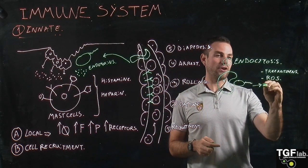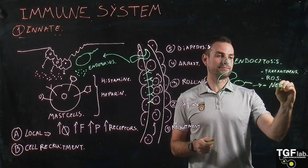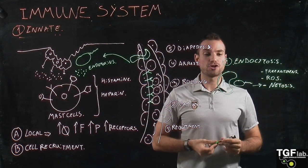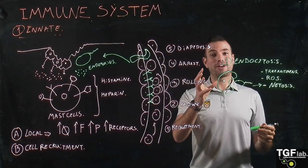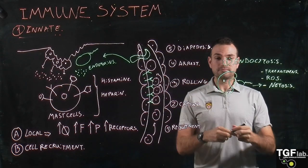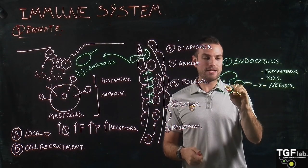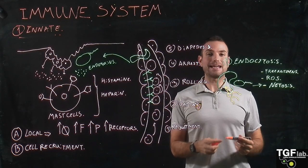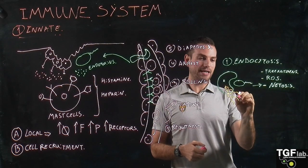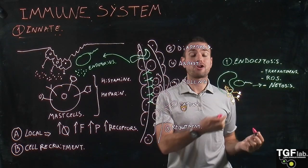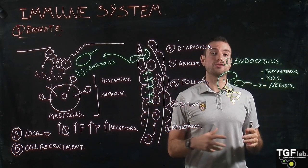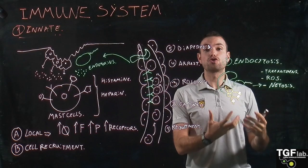Finally, they perform the process of NET formation. This is very interesting — the neutrophils secrete their chromatin, and within this chromatin we find different proteins from the bacteria as well as proteins that destroy the bacteria. This is very important for trapping and destroying the bacteria.